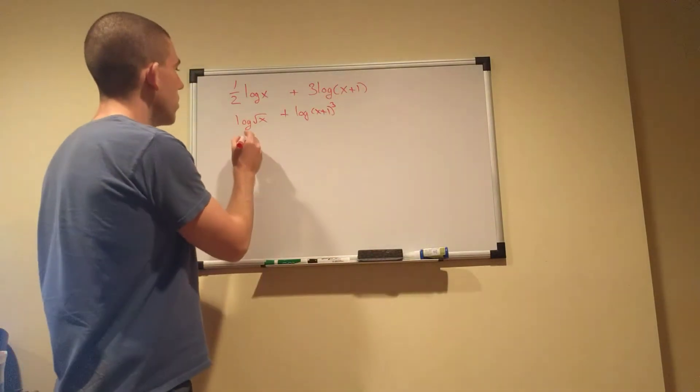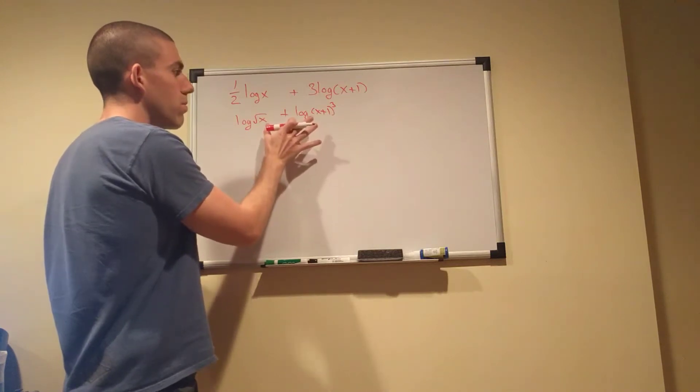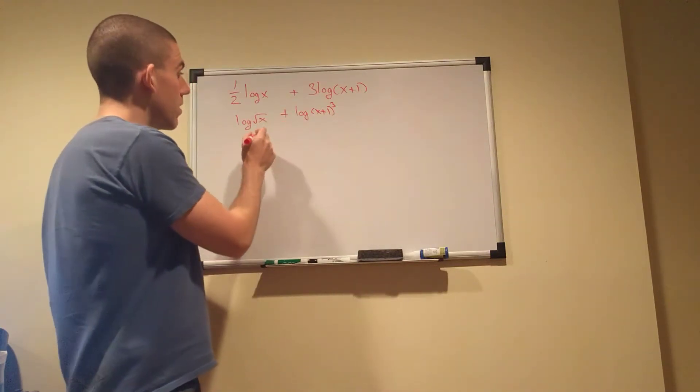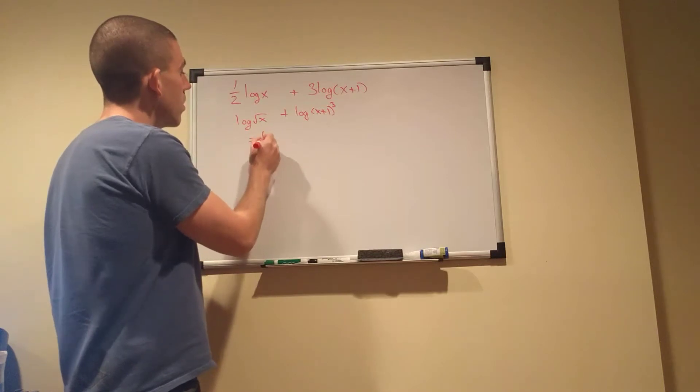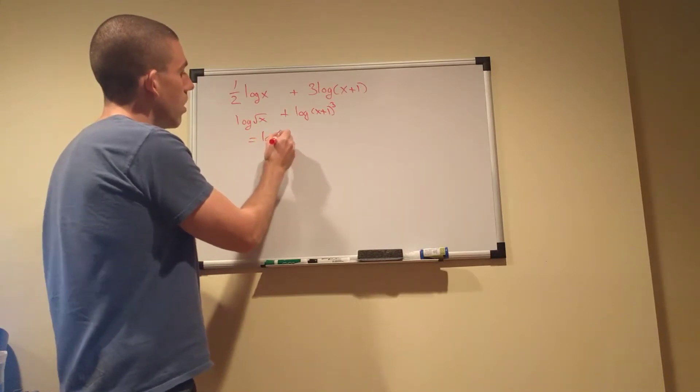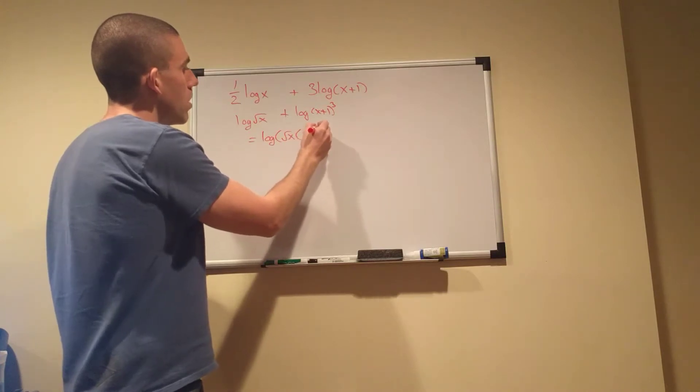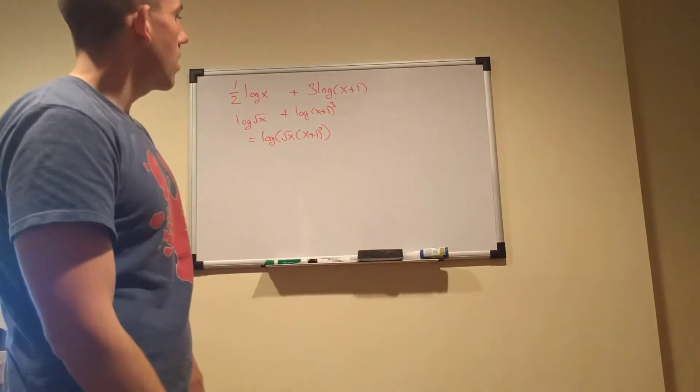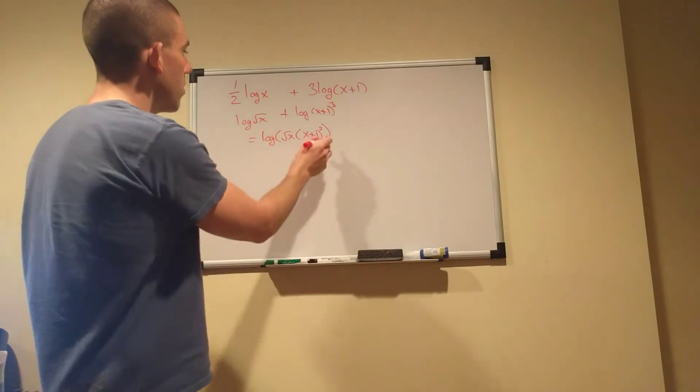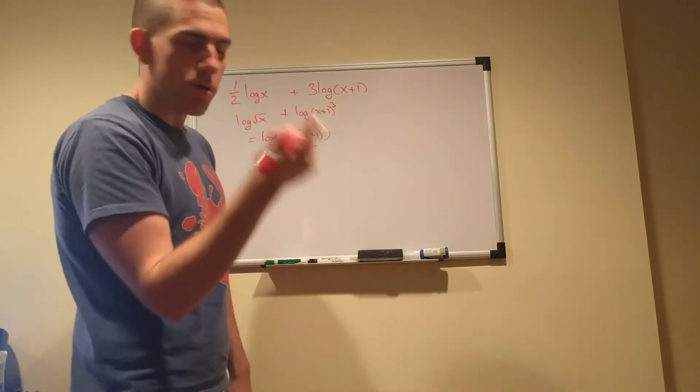Now what we can do is use the product rule in reverse to say, well, this is just log square root of x times x plus one to the third. And there it is. It's simple. Air quote, simple.